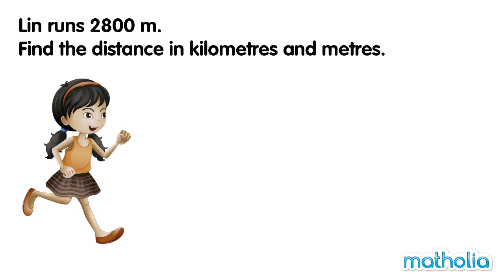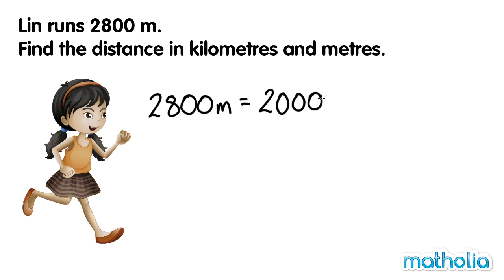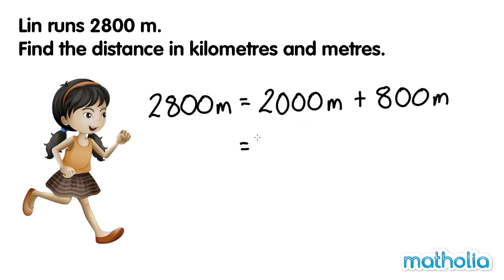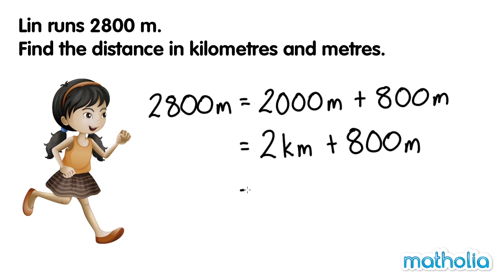Lin runs 2800 metres. Find the distance in kilometres and metres. We can write 2800 metres as 2000 metres plus 800 metres. 2000 metres is equal to 2 kilometres. So, 2800 metres is equal to 2 kilometres 800 metres.